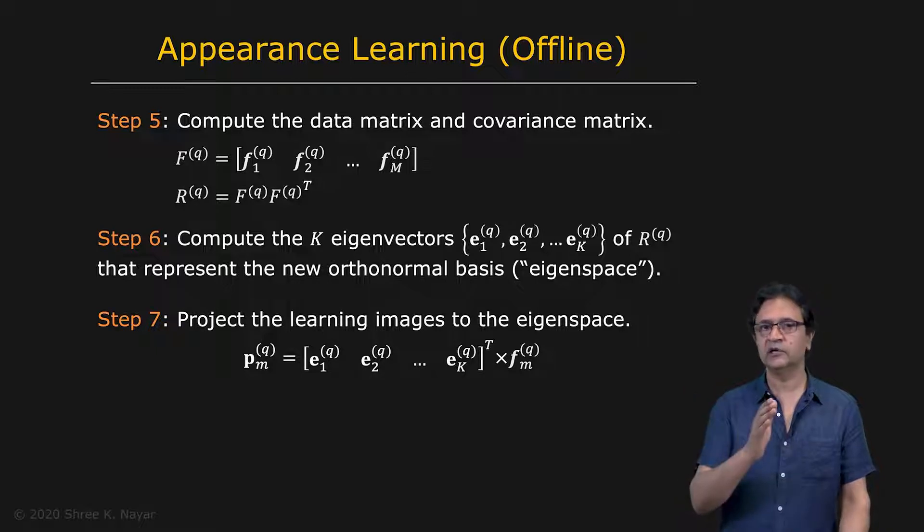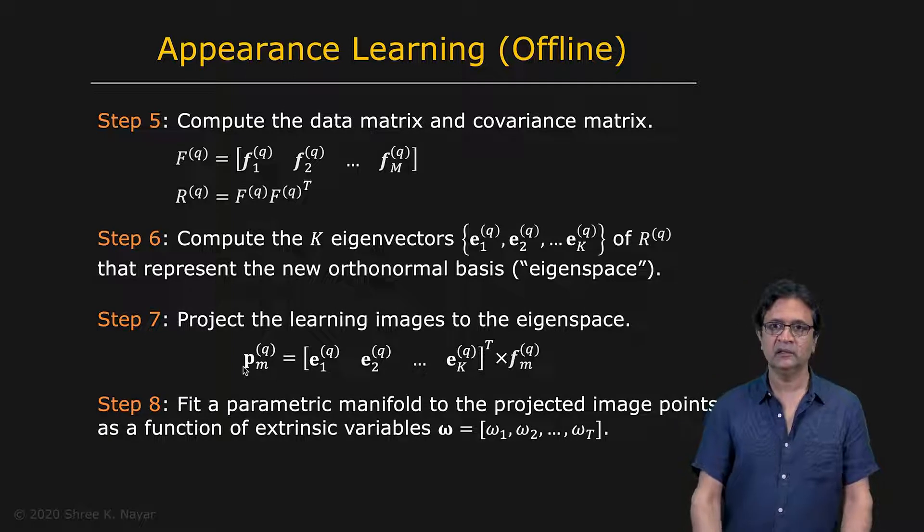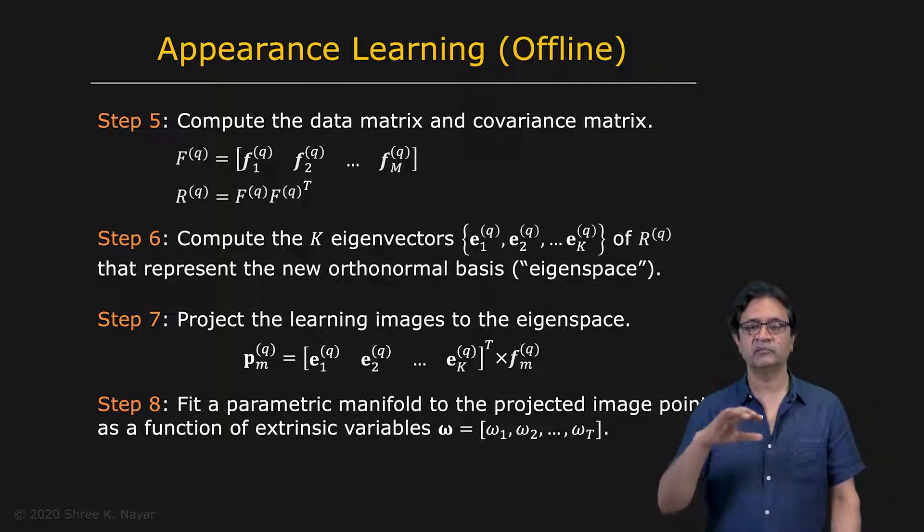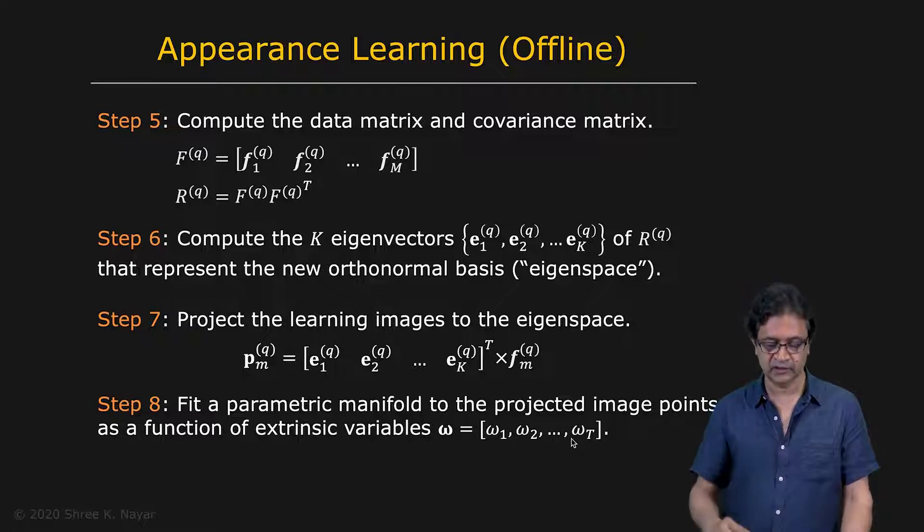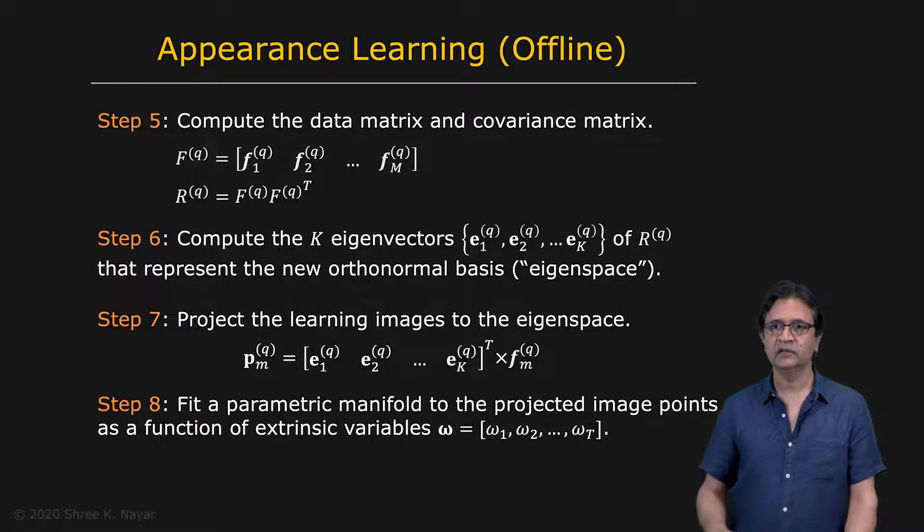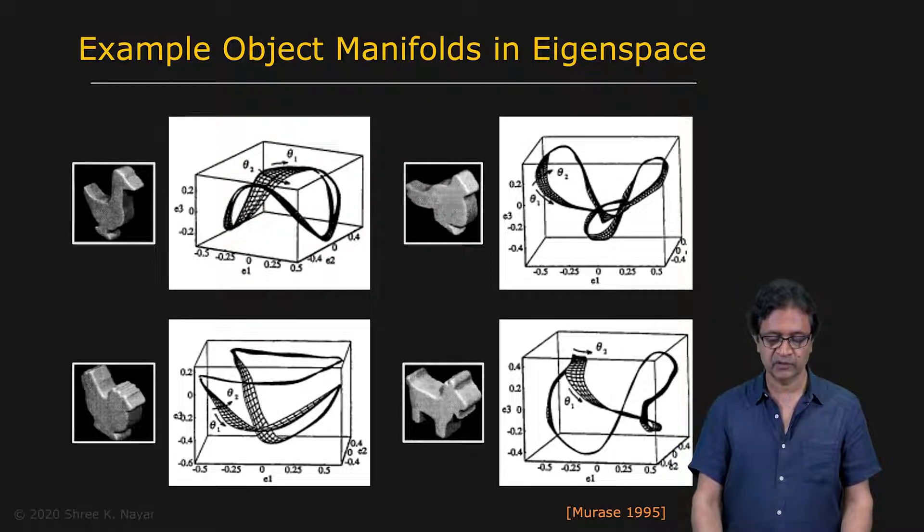And then we're going to take all our images of the object and project it to this eigenspace. We know how projection works. So we get points in the eigenspace. And as we showed before, we're going to fit a parametric manifold to these points so that we get a continuous representation, which is parameterized by the external variables omega. That's perhaps some for pose, some for illumination, et cetera. So that is your parametric eigenspace representation or appearance representation.